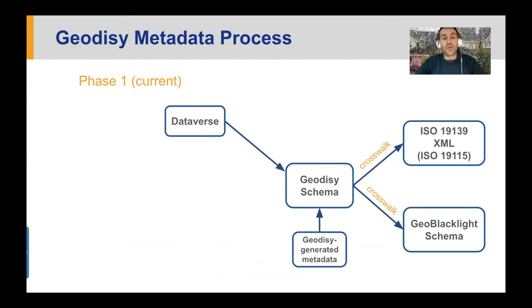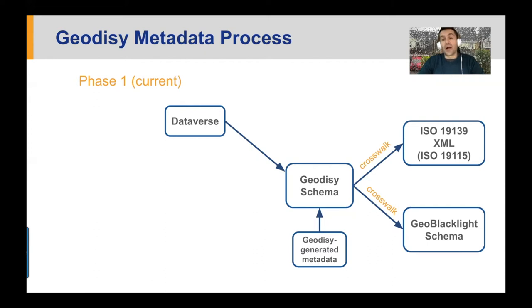This is a quick overview of our metadata processes. The data we take from Dataverse goes into Geodesy's metadata schema, where we crosswalk it into a standardized ISO metadata format — ISO 19115. Those records we ship to OpenGeo metadata on GitHub for other institutions like Stanford or University of Michigan to use in their GeoBlacklight applications. But we also crosswalk it to the GeoBlacklight schema metadata, which we use for discovery.